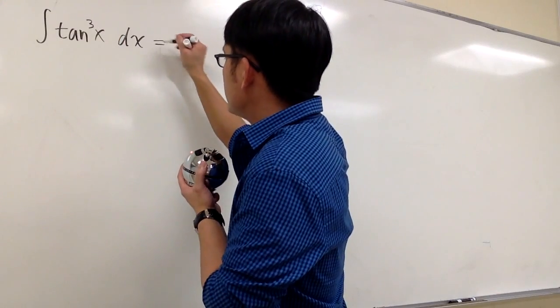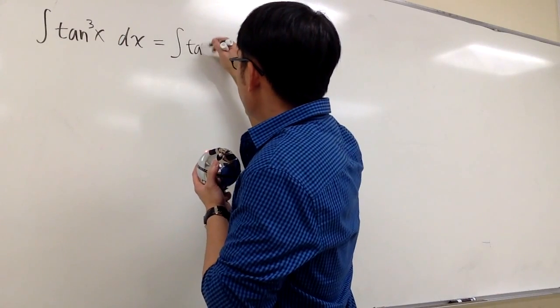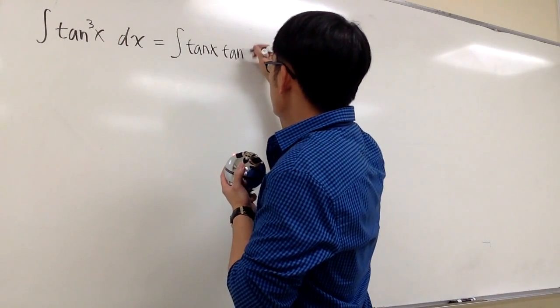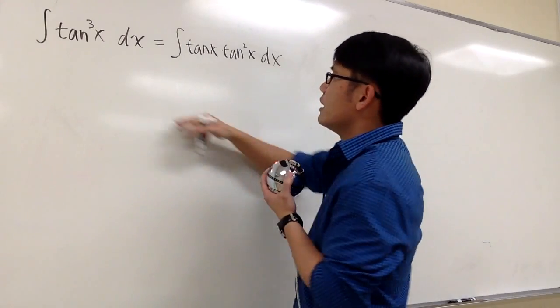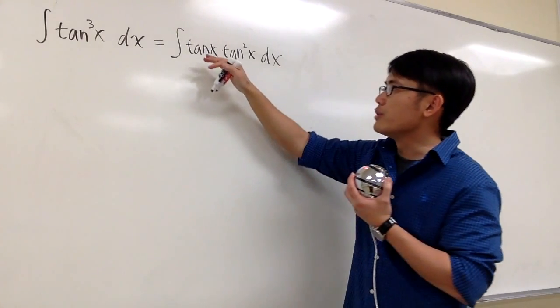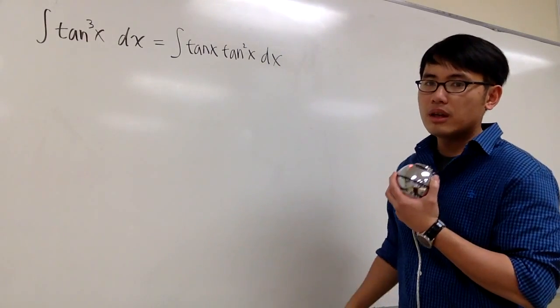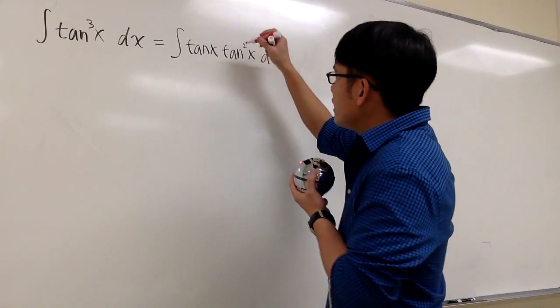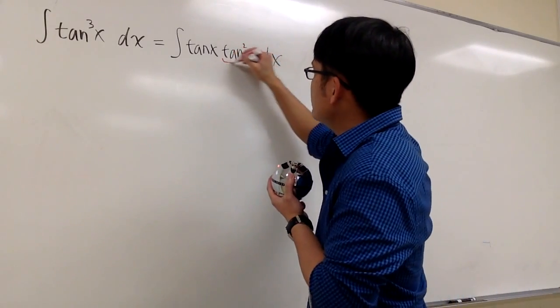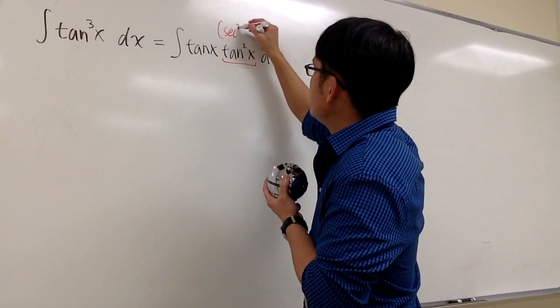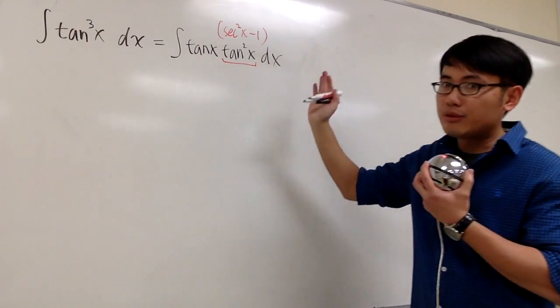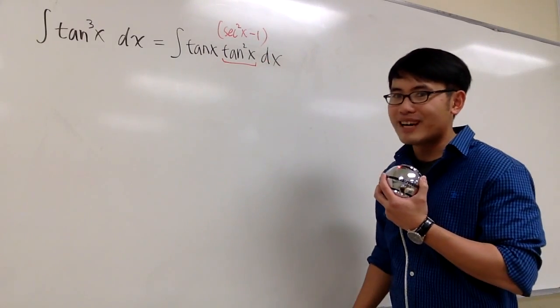To integrate tangent to the third power, this is the same as integrate tangent x times tangent squared x dx. I just break down the third power into the first power times the second power. This way, we can look at tangent squared as secant squared x minus 1. We really have to have the secant squared to come out to help us out.